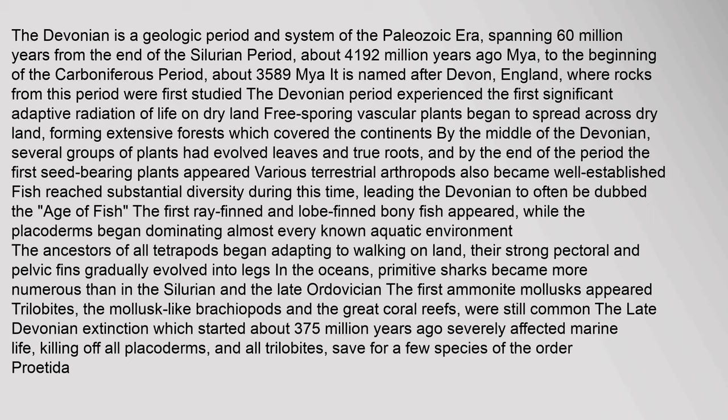Extensive forests formed which covered the continents by the middle of the Devonian. Several groups of plants had evolved leaves and true roots, and by the end of the period the first seed-bearing plants appeared. Various terrestrial arthropods also became well-established. Fish reached substantial diversity during this time, leading the Devonian to often be dubbed the Age of Fish. The first ray-finned and lobe-finned bony fish appeared, while the placoderms began dominating almost every known aquatic environment. The ancestors of all tetrapods began adapting to walking on land, their strong pectoral and pelvic fins gradually evolved into legs.